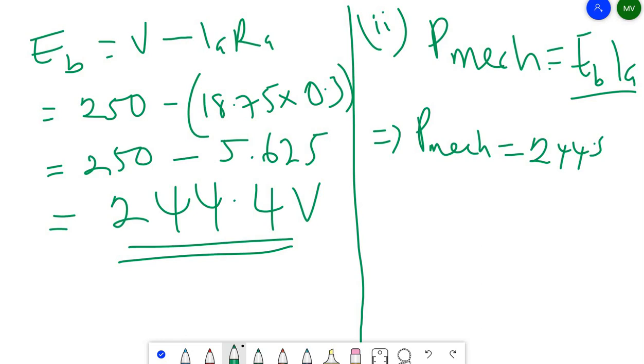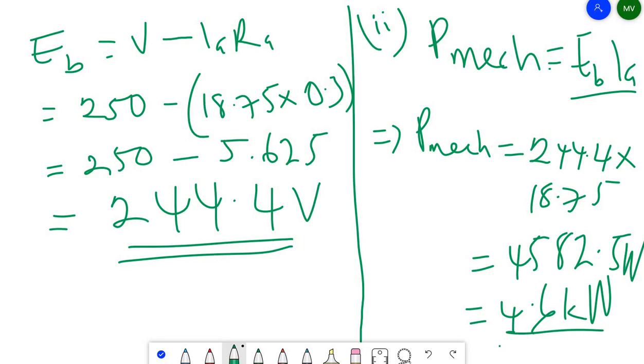Our Eb we found it out to be 244.4 times our Ia which is 18.75. Then you'll realize we're going to get the product of those two, which is 4582.5. This is power, so we should immediately get watts. So if you like, 4.6 kilowatts.